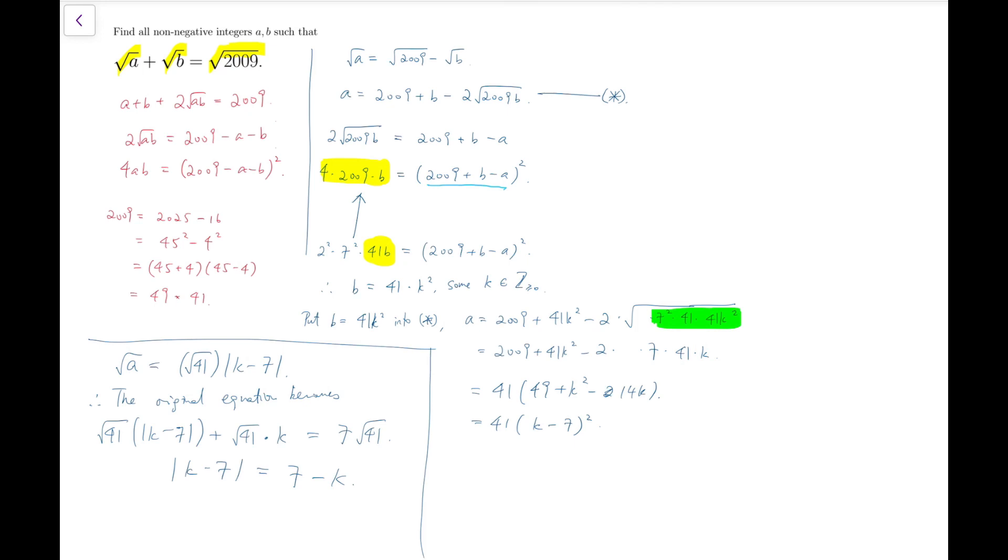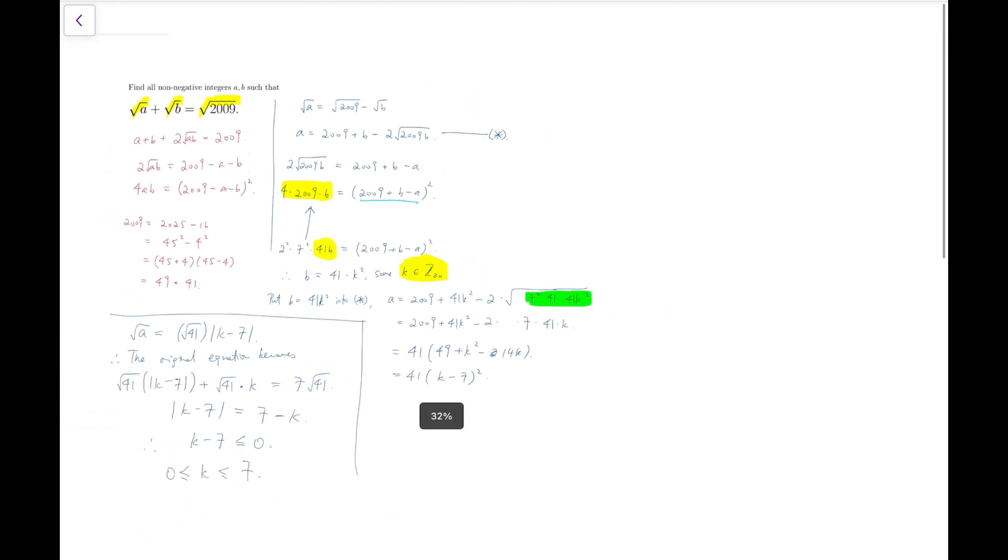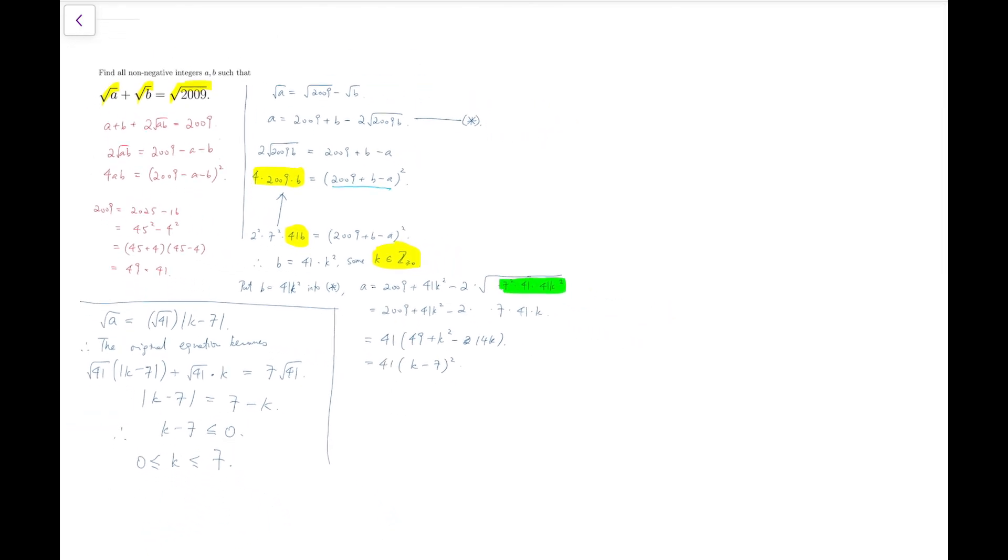Now, the only thing for this to happen is that the absolute value of some number is equal to negative 1 times that number itself. So that means k minus 7 must be negative or zero. And combined with the fact that k is a non-negative integer, we can say that all values of k between 0 and 7 would work.